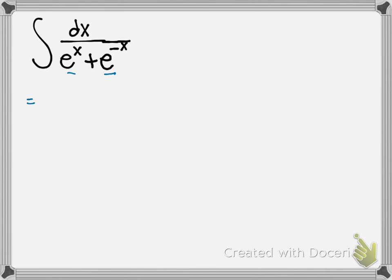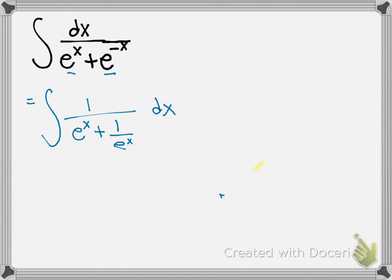The easiest way is to rewrite this so we can simplify it algebraically. I'm going to rewrite this as 1 over e to the x plus 1 over e to the x, dx. That e to the negative x can be rewritten as 1 over e to the x — that's worthwhile to notice.